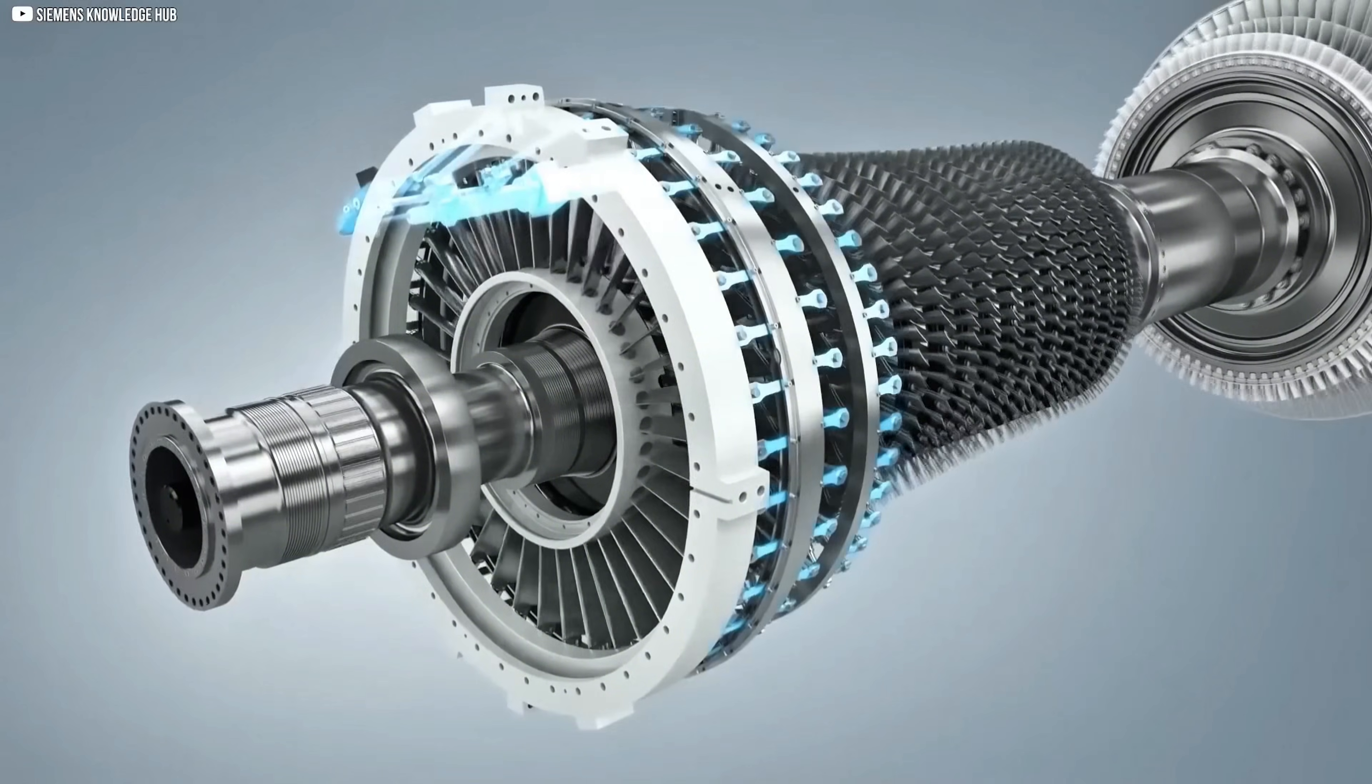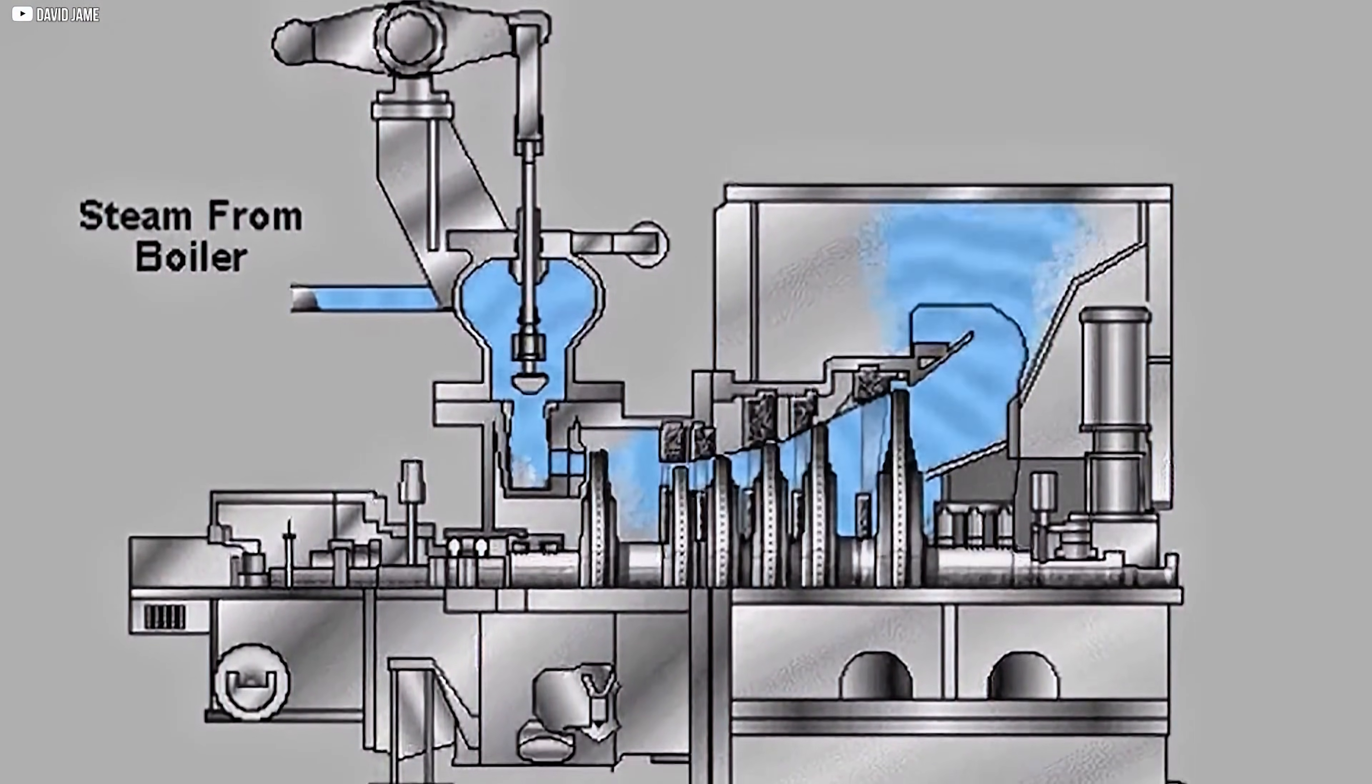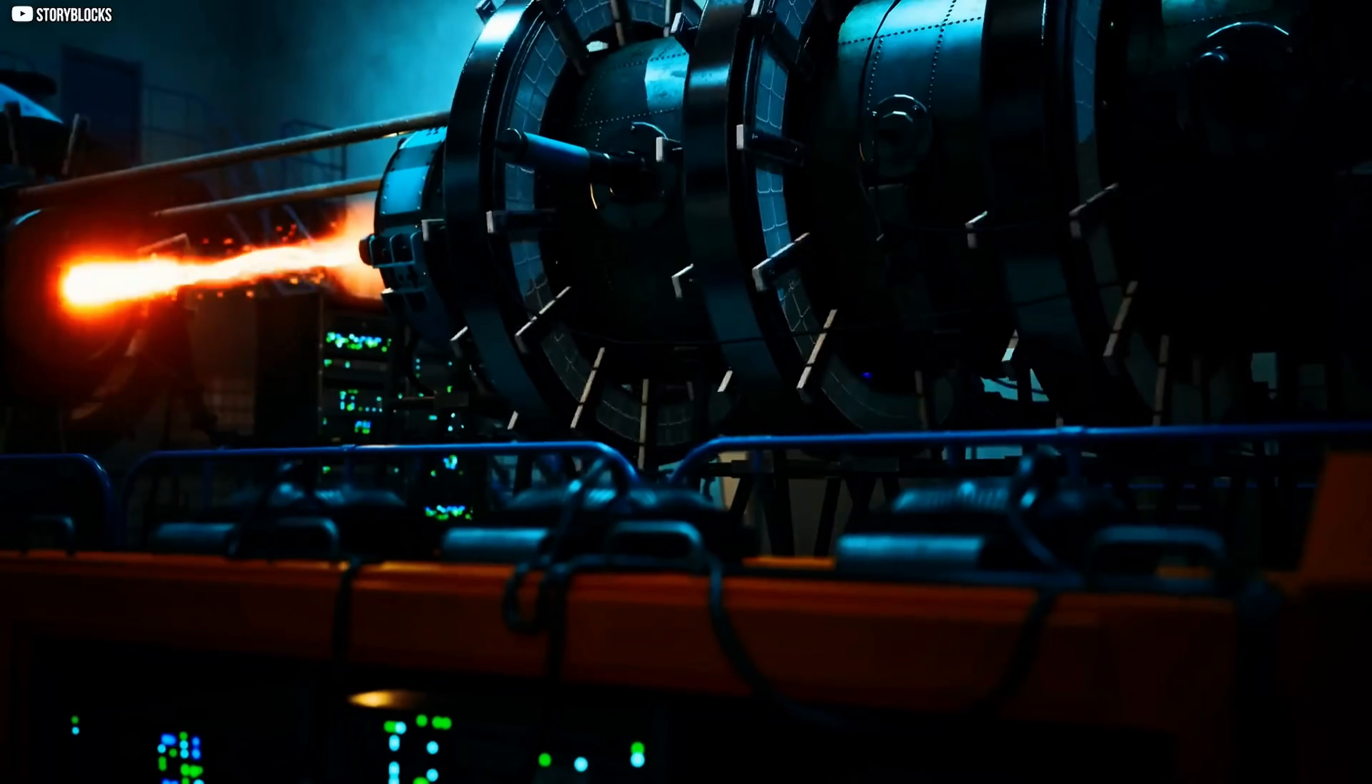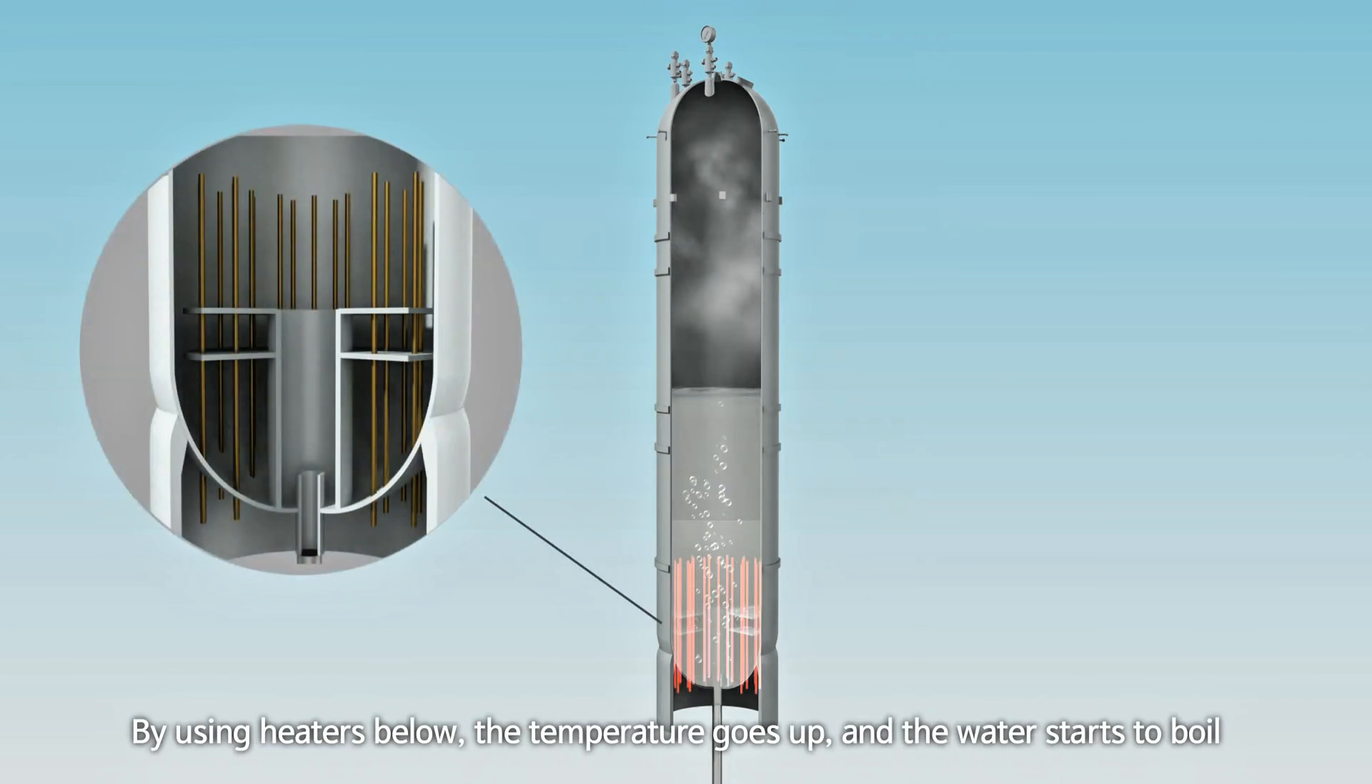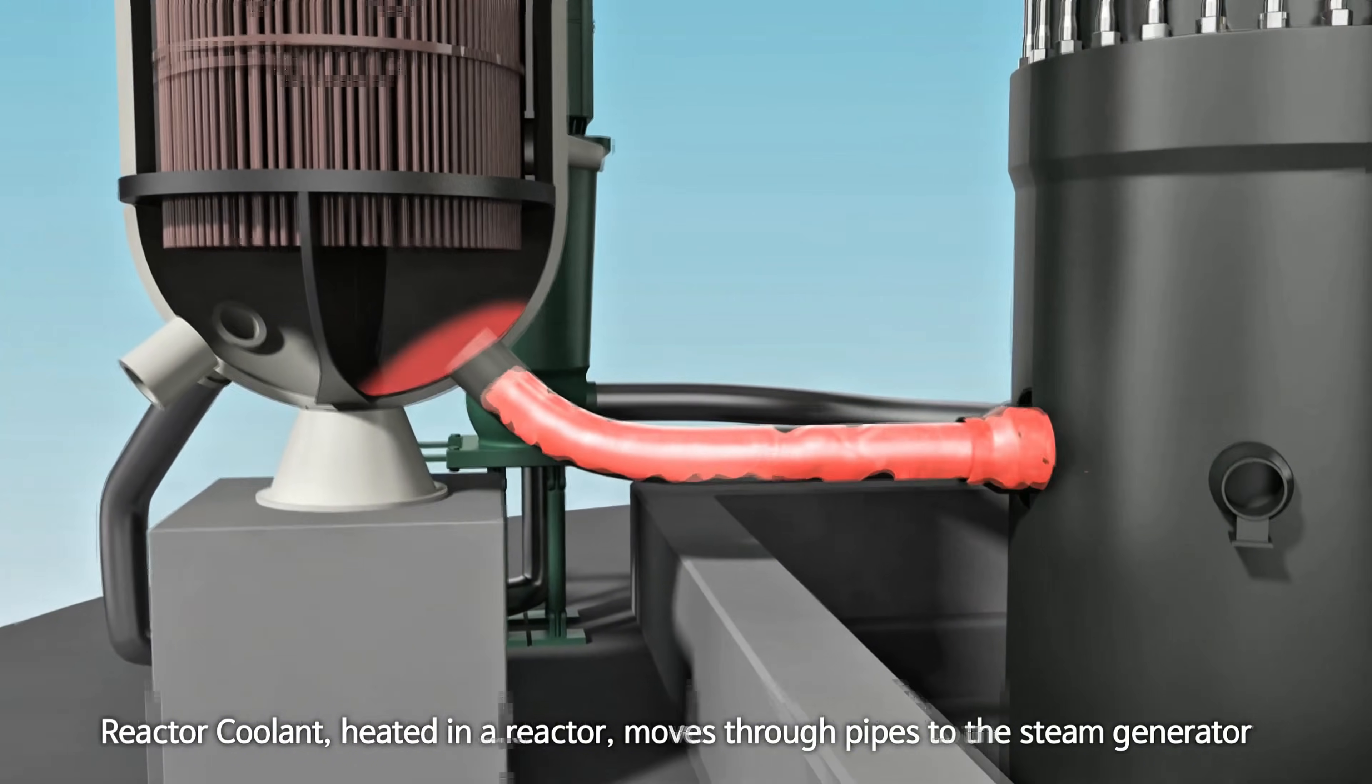We've pushed steam technology as far as it can go. Today's ultra-supercritical coal or nuclear plants run boilers at staggering conditions, roughly 600 degrees Celsius, and pressures around 350 bar, over 5,000 psi. That does gain a bit more efficiency, now around 40 to 45 percent, but it's brutally hard on the machines.